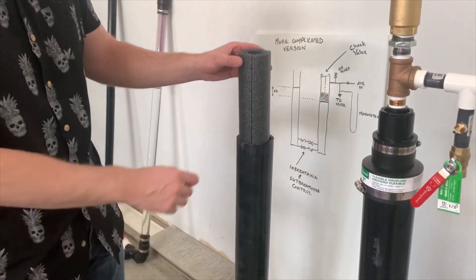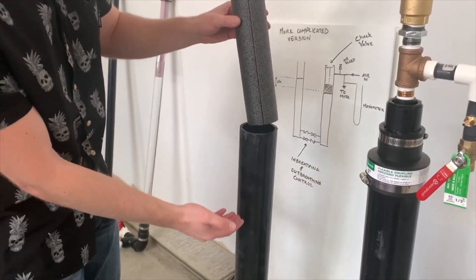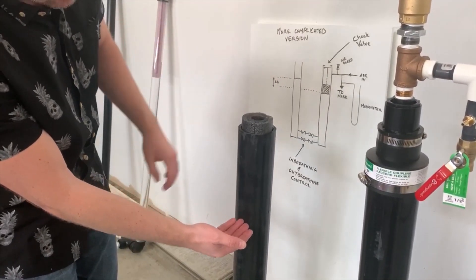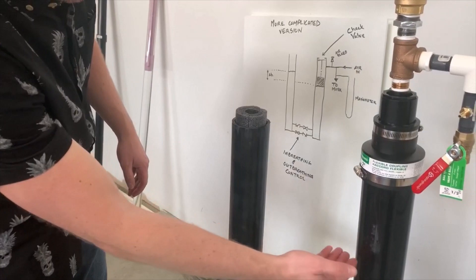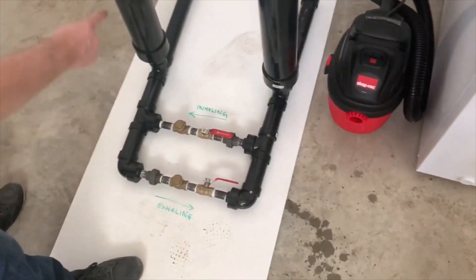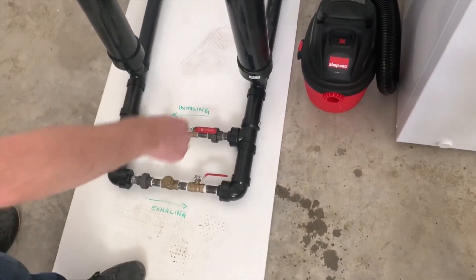On this side of the U-tube is just a piece of foam to demonstrate where the water level is in the system. At rest, the water level is right about there on both sides of the U-tube. Down here you can see the check valves and ball valves which allow you to control the flow in either direction.